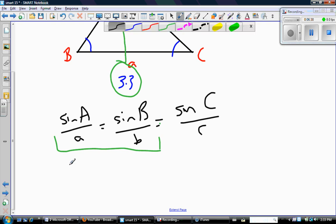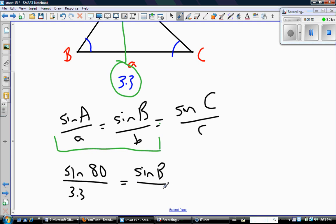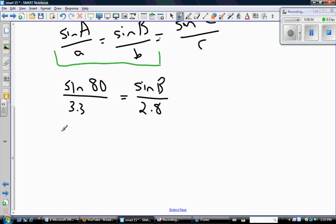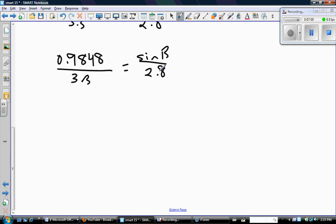So sine A, so that would be sine 80 over 3.3 is sine B, and I don't know what that is, but that side b is 2.8. So now this is a calculator question. Sine 80 degrees is 0.9848, and so now I'm going to cross multiply. So 2.8 times 0.9848 gives me 2.7574, and 3.3 times sine B, well it's just 3.3 times sine B. So divide everything by 3.3 because I'm trying to isolate the sine B portion.